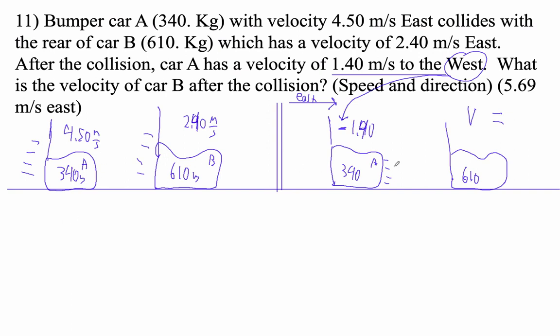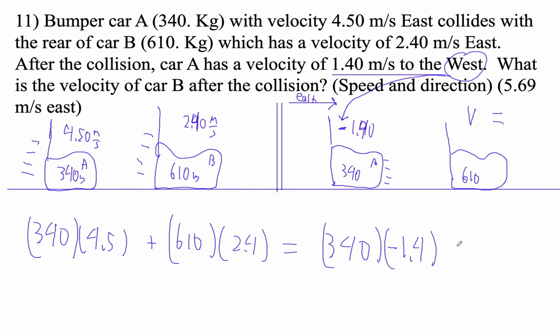So we can do this. Drawing the picture is all the work, really. The rest of this is just pretty simple math. So 340 times 4.5 plus 610 times 2.4 equals 340 times negative 1.4 plus 610V. Dear Lord, look at that. Here's what I'm going to do. Let's start on this side.